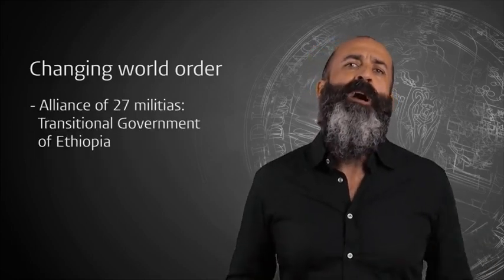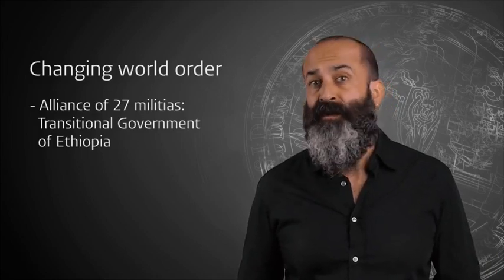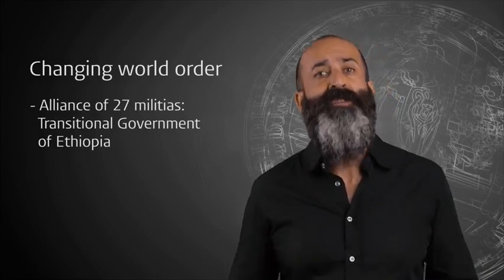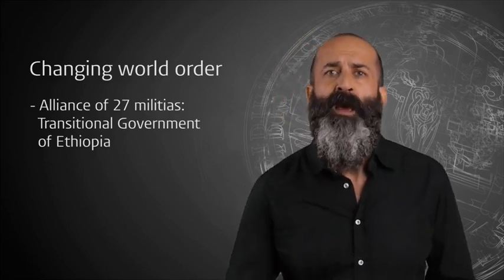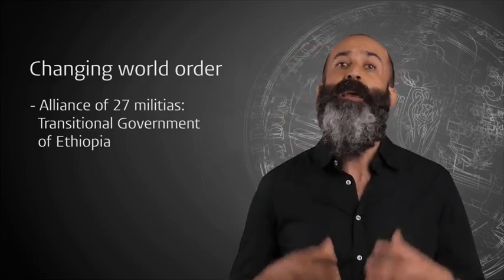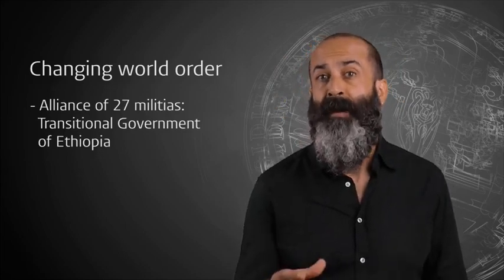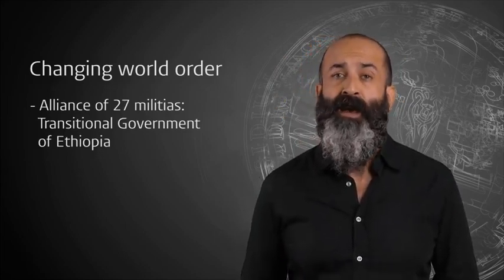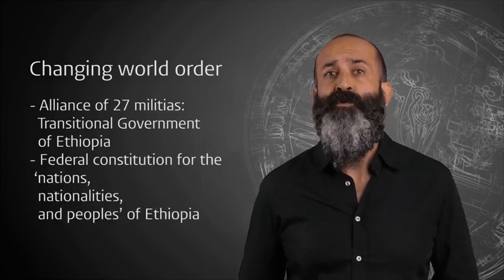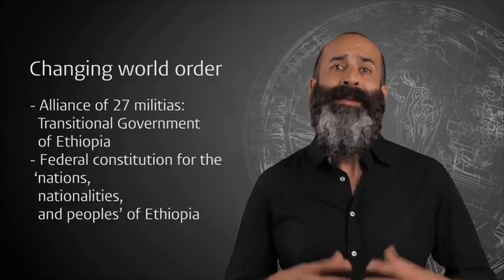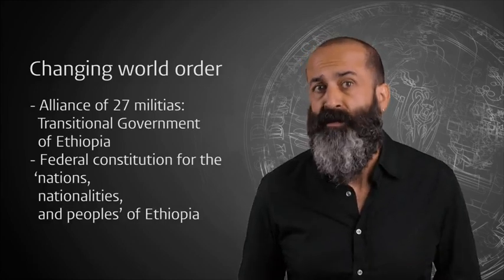The loose alliance of 27 opposition militias first set up the transitional government of Ethiopia. Federalism came to be seen as the only way to recognize and empower various ethnic groups, leading to the adoption of a federal constitution for the nations, nationalities, and peoples of Ethiopia.